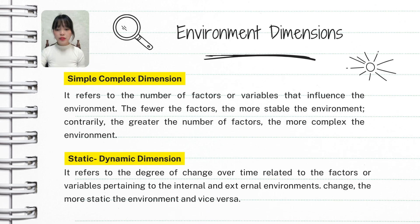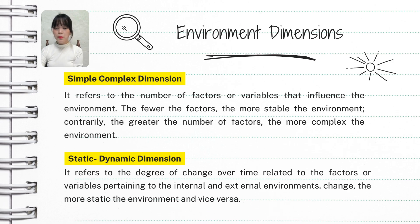Environment Dimensions. The simple-complex dimension of an environment is about how many different factors or variables are affecting a business. In a simple environment, there are just a few factors influencing the business — for example, if a company only needs to consider a few key competitors and a stable set of regulations, it's a simpler environment, easier to manage and predict. A complex environment, on the other hand, has many factors at play — numerous competitors, constantly changing regulations, and various market trends. For example, a company operating in a rapidly evolving tech market with many players and variables faces a more complex environment. The more factors you have to deal with, the more complex the environment becomes, making it harder to manage and predict.